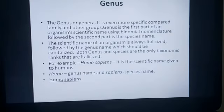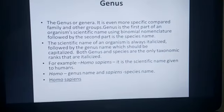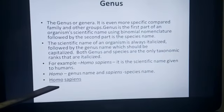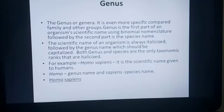Both genus and species are the only taxonomic ranks written in italics. For example, Homo sapiens — the two words are written in italics. Whenever you see italics in printed text, you know we are talking about a scientific name. In Homo sapiens, 'Homo' denotes genus and 'sapiens' denotes species. When writing by hand, since we cannot write in italics, you have to underline — 'Homo' with a capital H and 'sapiens' with a lowercase s.